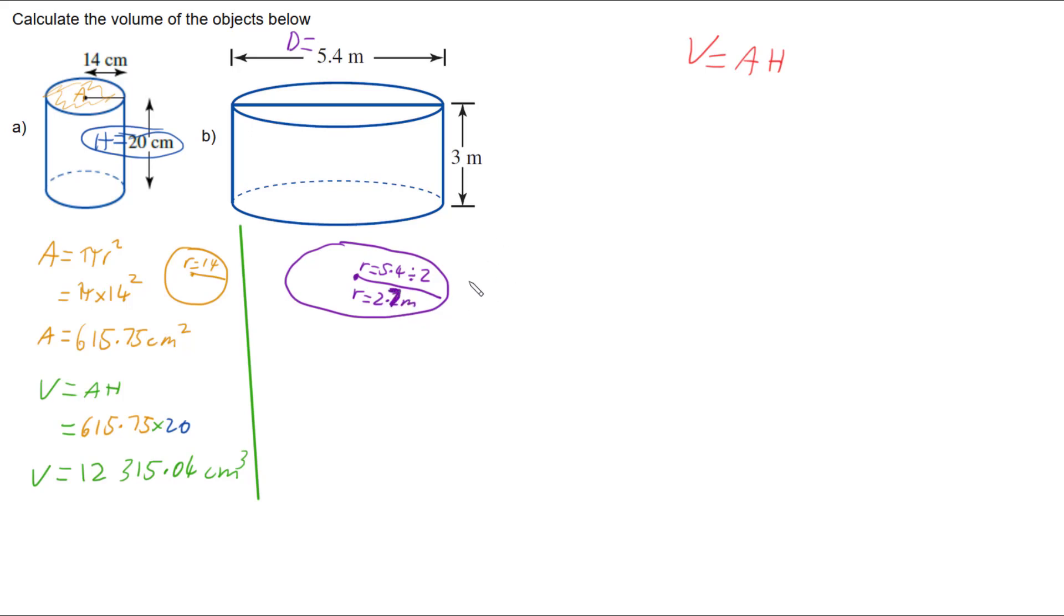And so if we work out the area, which is pi times radius squared, we're going to have pi times 2.7 squared. And so the area of our top circle is 22.90 metres squared.